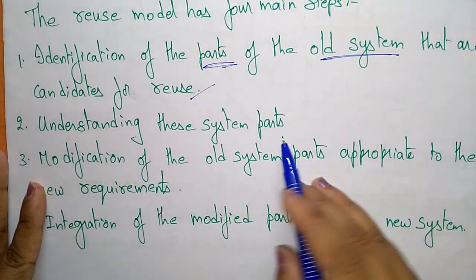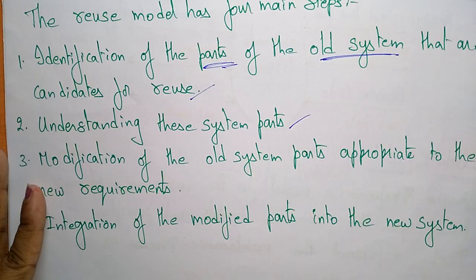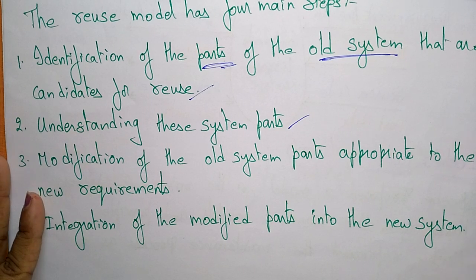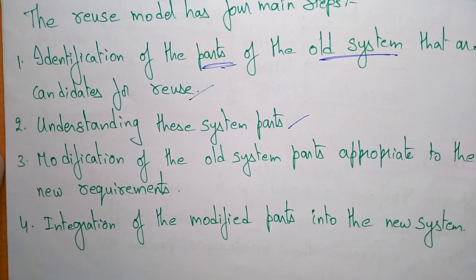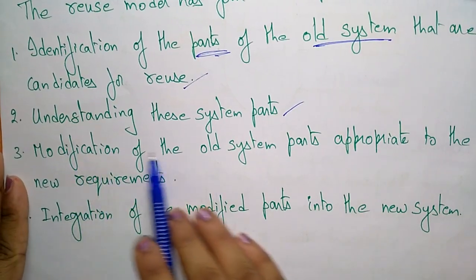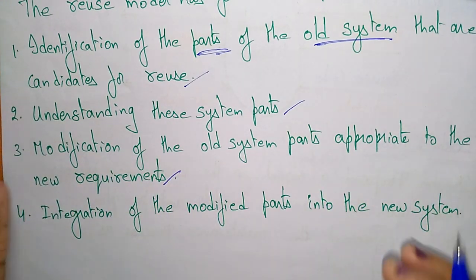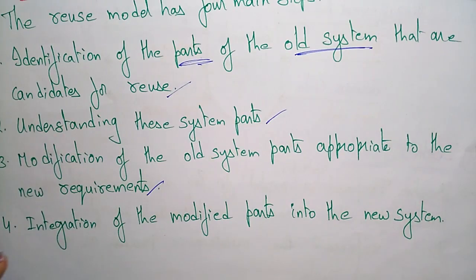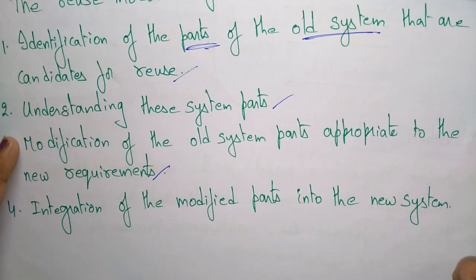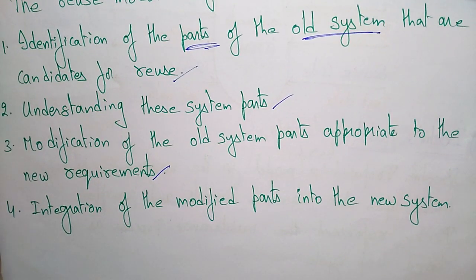After that, understanding these system parts — whatever parts you have identified for reuse, now understand them, meaning from where you can place these parts. After that comes the modification of the old system parts appropriate to the new requirements. You study those parts and try to modify them to fit the new requirements.